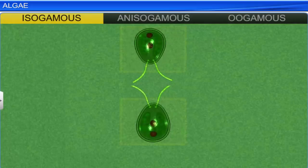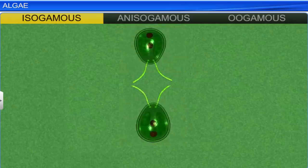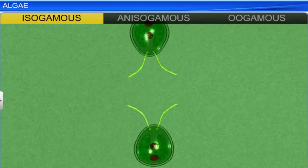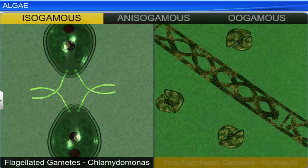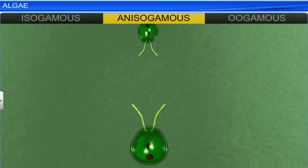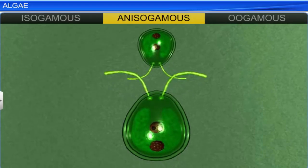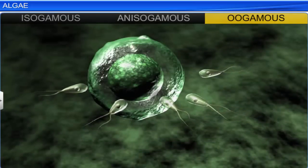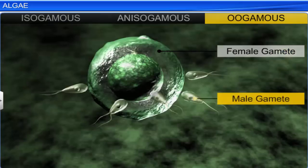When the fusion is between two gametes of similar size, the reproduction is called isogamous. The gametes in this case can be flagellated, as in Chlamydomonas, or non-flagellated, as in Spirogyra. When fusion takes place between two gametes of dissimilar size, the reproduction is termed anisogamous. Oogamous is a fusion between a large, non-motile female gamete and a small, motile male gamete.